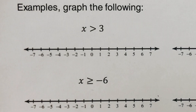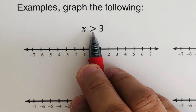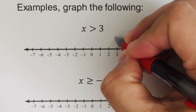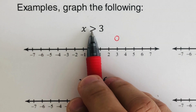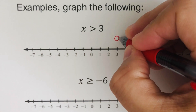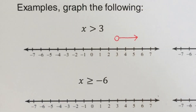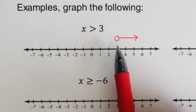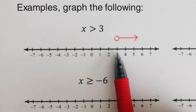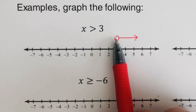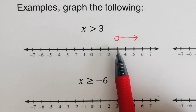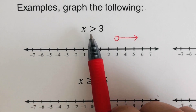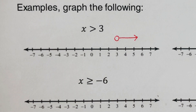Let's take the first example: x is greater than 3. Since there's no bar underneath, we're going to use an open circle on 3. The direction of the arrow is to the right, so we draw an arrow directed to the right. An open circle means that 3 is not included — only values greater than 3 are solutions to this inequality.